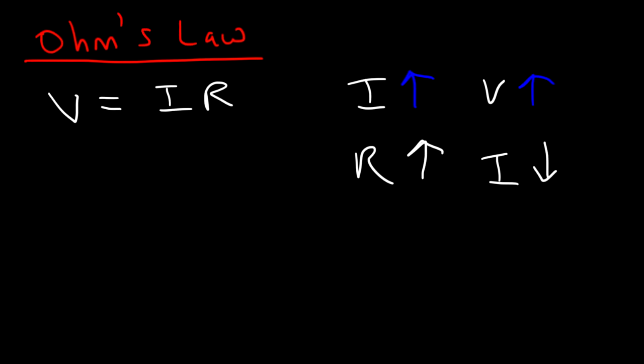Think of a highway. If you have a seven-lane highway, it's easy for cars to flow through it, as opposed to a one-lane highway. A one-lane highway has more resistance, so fewer cars can flow through it — the cars representing electric current. If you decrease the resistance by adding more lanes, more cars can flow, so there's more current.